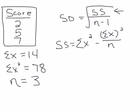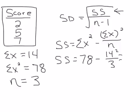So we could just plug in what we have. We have 78 minus, now it's 14, 14 squared divided by 3. Okay? Simple as that. We should get 12.67. It's a little sloppy, but 12.67 is our sum of squares.